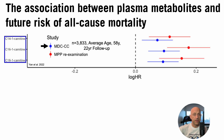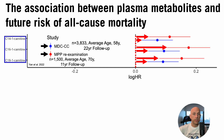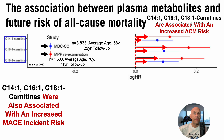The findings were then replicated in the MPP re-examination study, which included a smaller sample size of about 1,500 people with an average age of 67 years and an 11-year follow-up. For each of these three acylcarnitines, they were significantly associated with an increased all-cause mortality risk for both studies, potentially highlighting their importance as markers of poor health, especially considering they were also associated with having a major adverse cardiovascular event.